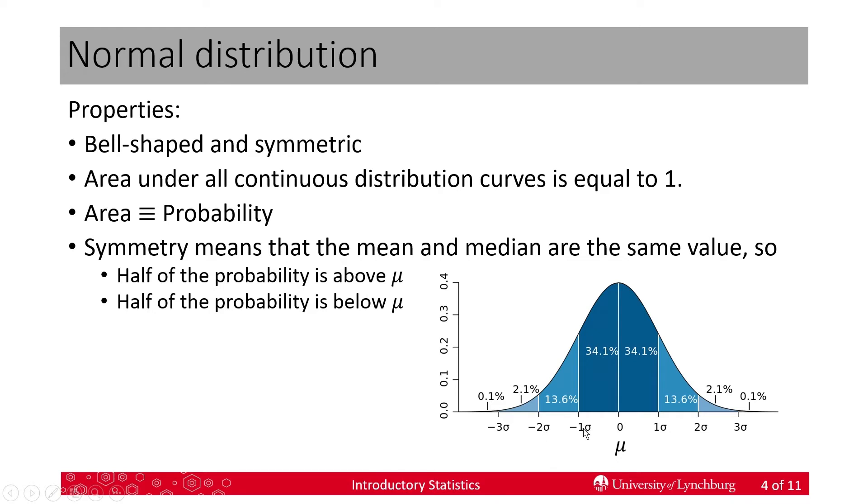Notice that even if I take an area that's not from mu, I can take any area, say, from negative one standard deviation to negative two standard deviations, that's 13.6% or 0.136 probability. Look at the difference, the probability for the area between one positive one and positive two standard deviations. It's the same. So, that's a property we're going to make use of to make things easier in the future when we're solving problems.